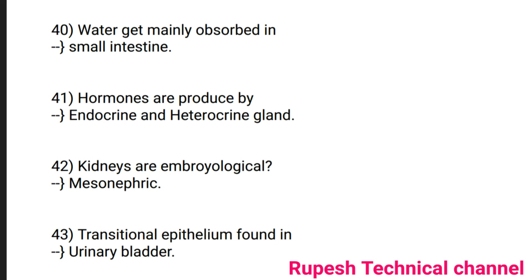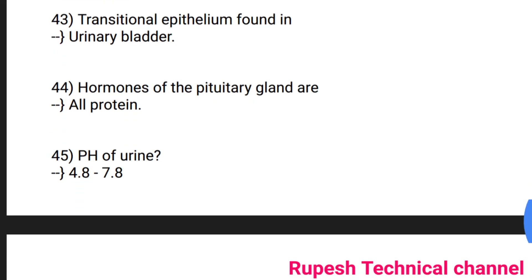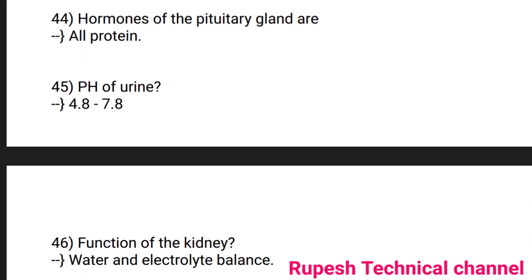Question number 42: Kidney are embryologically mesonephric. Question number 43: Transitional epithelium is found in the urinary bladder. Question number 44: Hormones of the pituitary glands are all protein. Question number 45: pH of urine is 4.8 to 7.8. Question number 46: Function of the kidney is water and electrolytes balance.